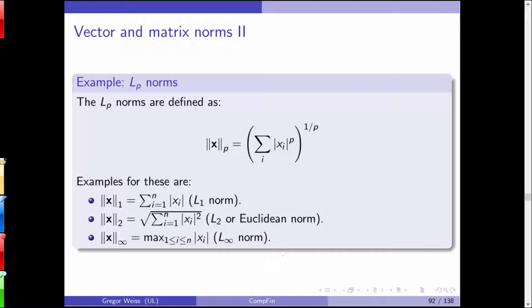For a three-dimensional vector with entries 1, 2, 3: the L1 norm is 6, the L2 (Euclidean) norm is the square root of 14, and the L-infinity norm is 3.